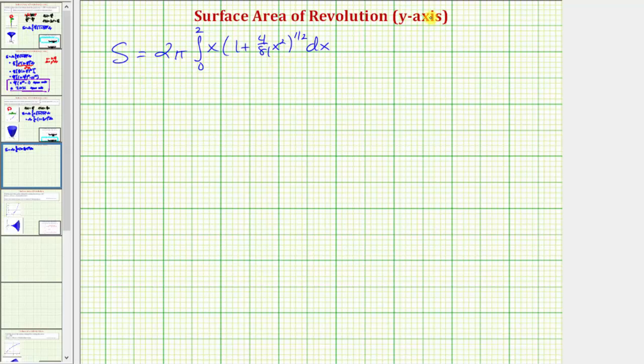Notice how we'll have to perform u substitution, where u is equal to 1 plus 4 over 81 x squared, so differential u is equal to 0 plus, here we're going to multiply by 2, so that would be 8 over 81 x dx. Let's go ahead and solve this for x dx by multiplying both sides by the reciprocal of 8 over 81, which would be 81 over 8. So we'll have 81 over 8 du equals x dx.